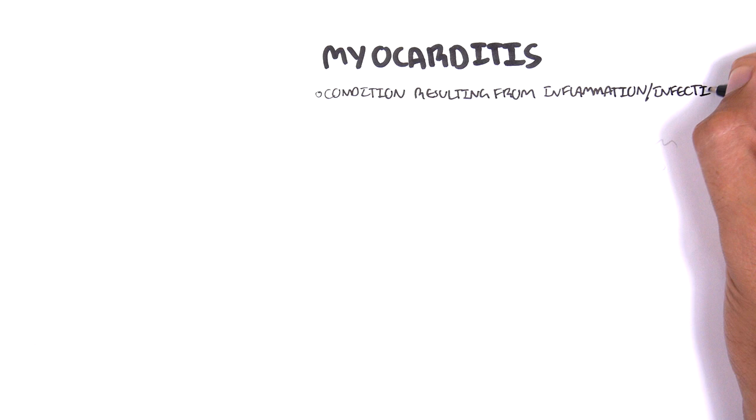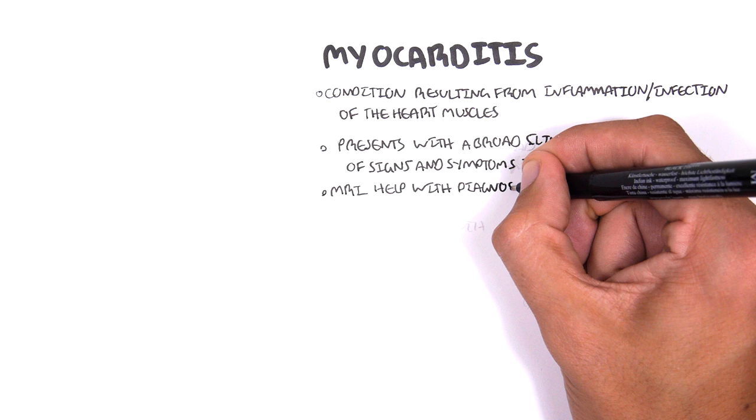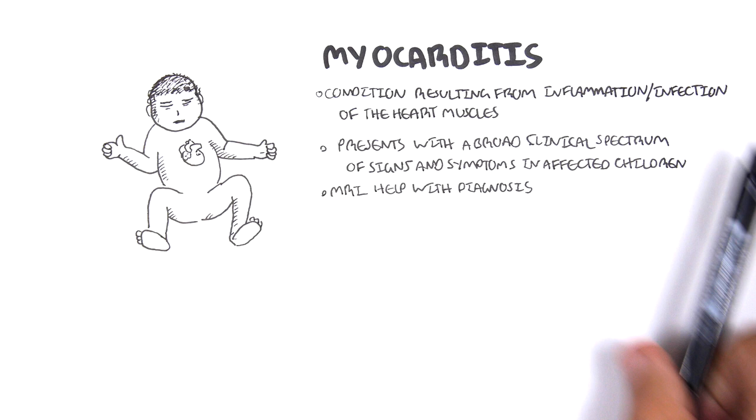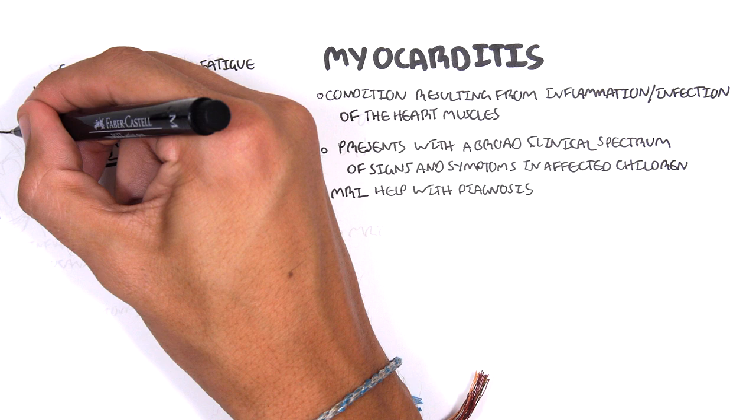Myocarditis is a condition resulting from inflammation and infection of the heart muscles. It presents with a broad clinical spectrum of signs and symptoms in children. MRI helps in the diagnosis. The signs include fatigue, chest pain, and signs of heart failure because the heart is irritated and cannot pump enough blood out of the heart. Myocarditis is inflammation of the myocardium, the muscle fibers of the heart.